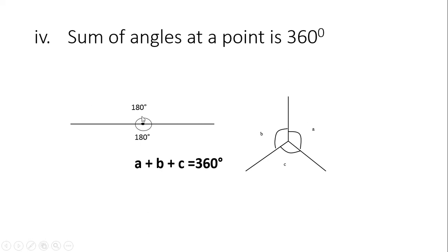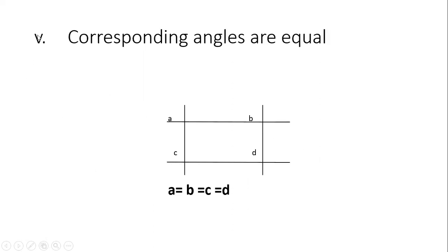The sum of angles at a point equals 360 degrees. Think of the point forming a complete circle. When you have two straight lines crossing, the angle above the straight line is 180 degrees and the angle below is also 180 degrees, giving 360 degrees total. The angles can be divided into parts — angle a plus angle b plus angle c equals 360 degrees at the point.